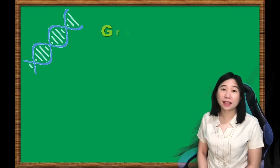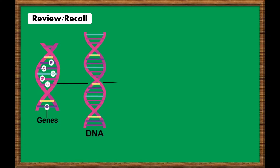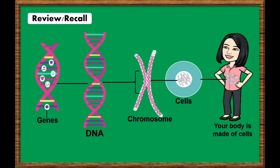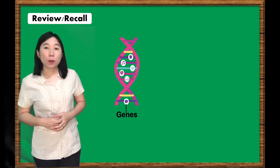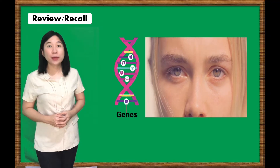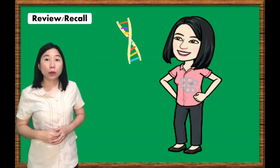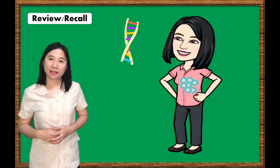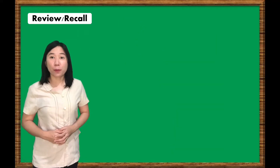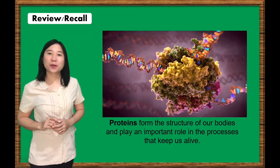Hello, students! Welcome to Grade 10 Science Lesson, and I'm your teacher, Mom Marian Soriano. Your genes are part of what makes you the person you are. You are different from everyone alive now and everyone who has ever lived. But your genes also mean that you probably look a bit like other members of your family. For example, have you been told that you have your mother's eyes or your grandmother's nose? Genes influence what we look like on the outside and how we work on the inside. They contain the information our bodies need to make chemicals called proteins. Let's find out more of these in today's lesson.